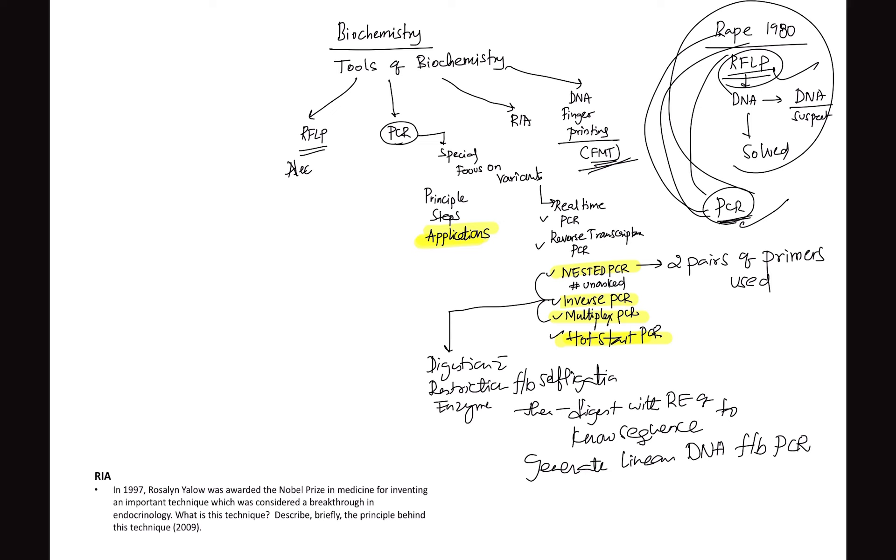What kind of questions are asking in RFLP, PCR, radioimmunoassay? These tools of biochemistry, they are asking three things: what is the principle, the steps, and what are the applications? There is one more area - I had seen a lot of questions coming - special focus on variants of PCR. With COVID in 2020, you might know what is reverse transcriptase PCR or RT-PCR. And also what is real time PCR, what is its advantage? There are new things which can be asked like unasked version: nested PCR and inverse PCR.